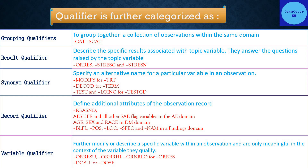Synonym qualifiers specify an alternative name for a particular variable in an observation. For example, in CM domain CMTRT has the synonym qualifier CMMODIFY; in AE domain AETERM has AEDECOD; and in findings class, TESTCD has TEST as its synonym qualifier.